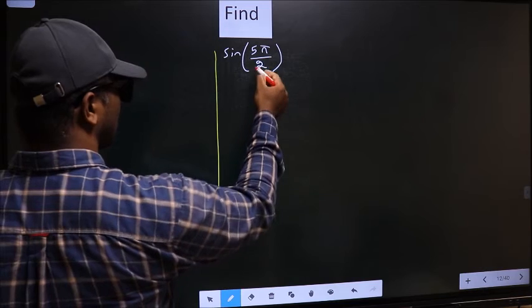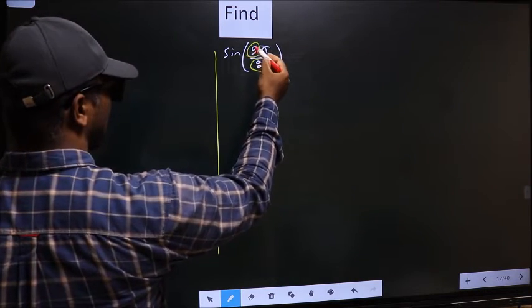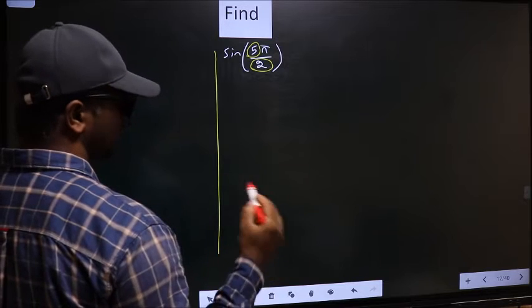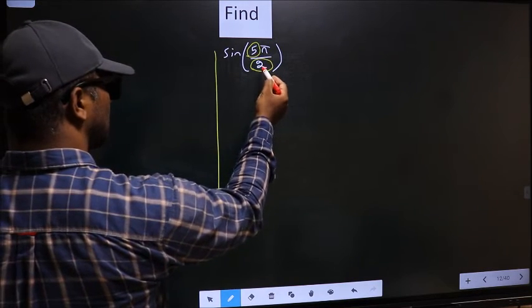In the denominator we have 2 and in the numerator we have 5. Now you should check 5 is close to which multiple of 2.